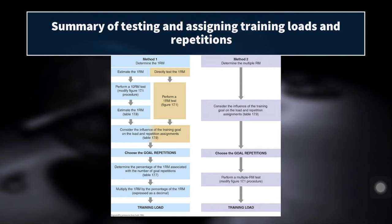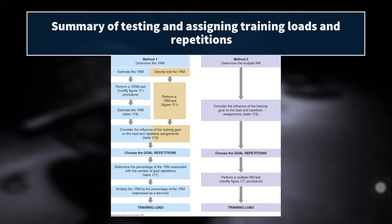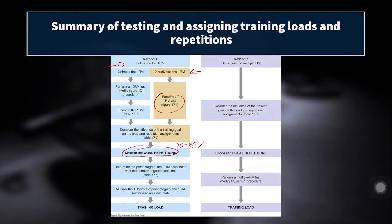Here's a summary of how we might implement 1RM testing. Method one is to determine the actual 1RM by performing a 1RM test, then considering the influence of the training goal on load and repetition assignments, and choosing the goal repetitions. For example, if our training goal is hypertrophy but we just did a 1RM test, we want to work with sets of 8 to 10. Looking at the 1RM table, sets of 8 to 10 correspond to roughly 75 to 85% — but that's truly maxing out. So we might scale back 5 to 10% and train at around 70 to 80% of their 1RM.